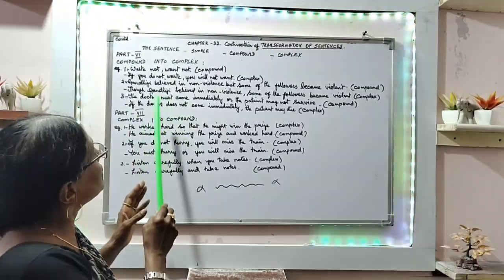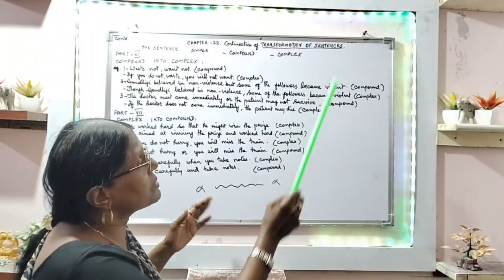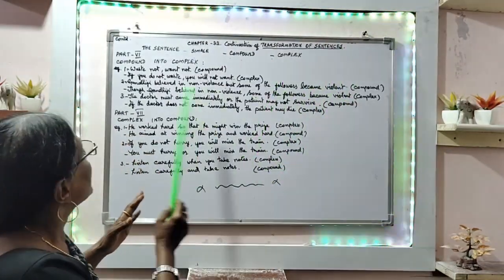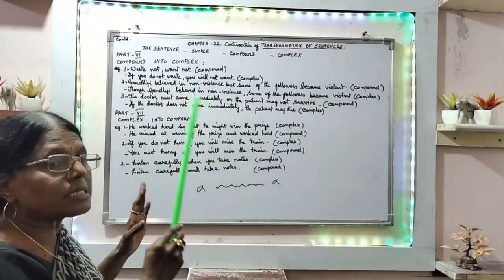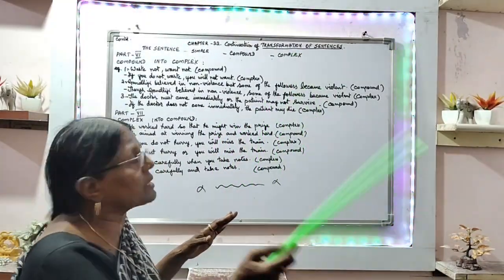Third example: the doctor must come immediately or the patient may not survive. That is a complex sentence. If the doctor does not come immediately, the patient may die. That is complex sentence.